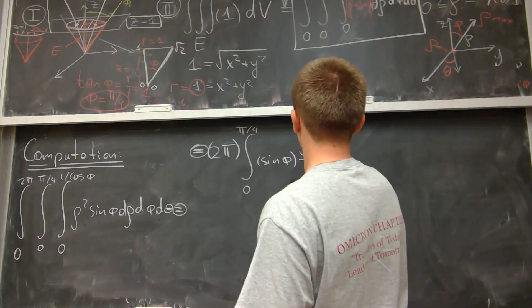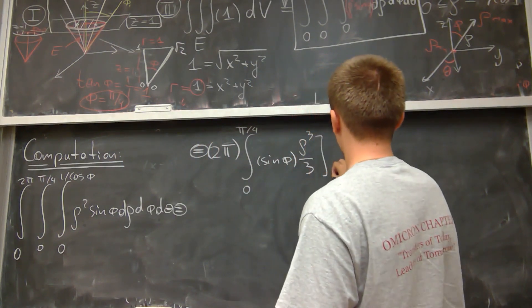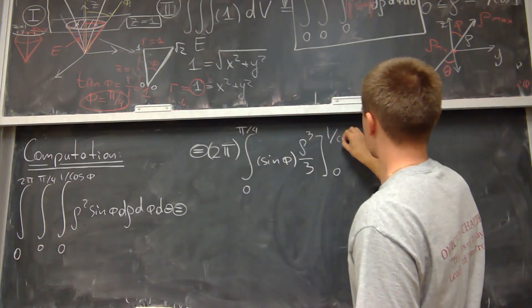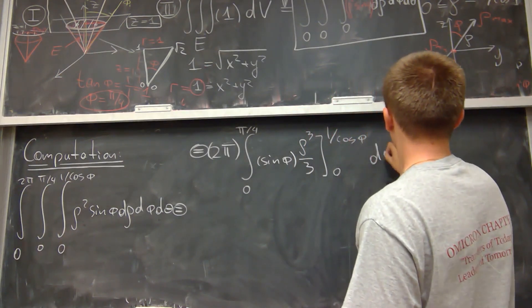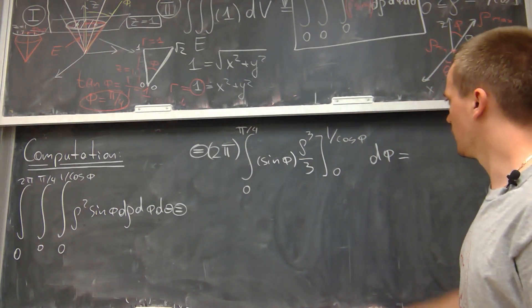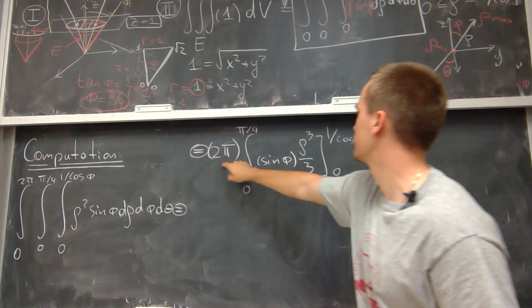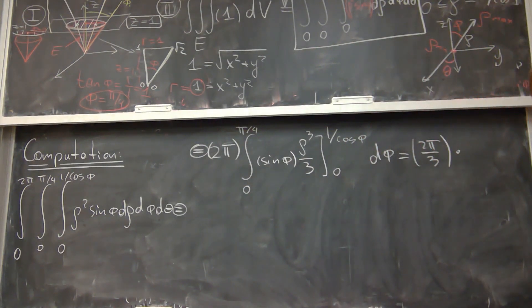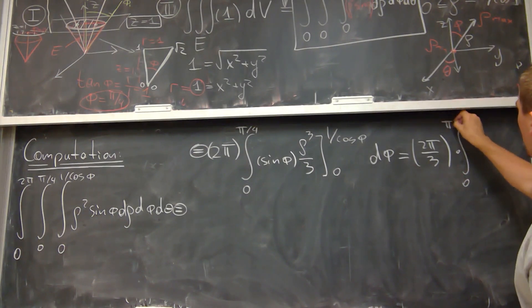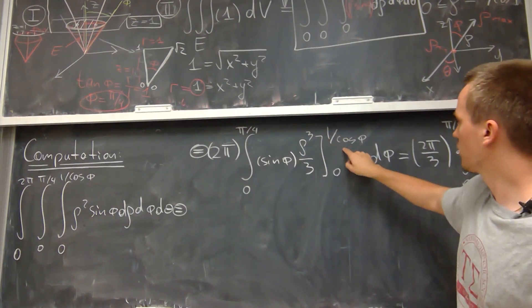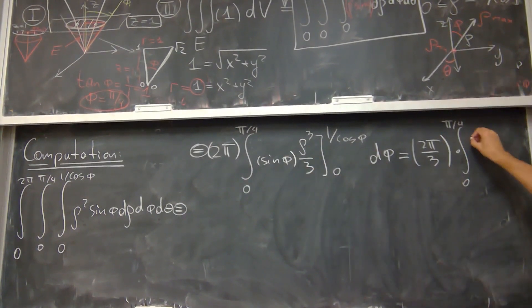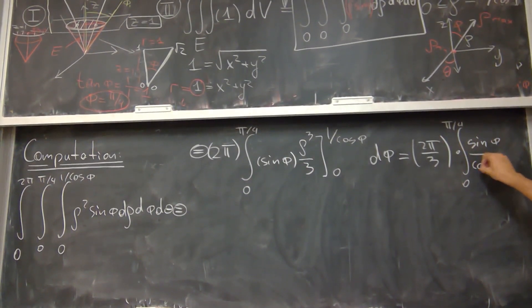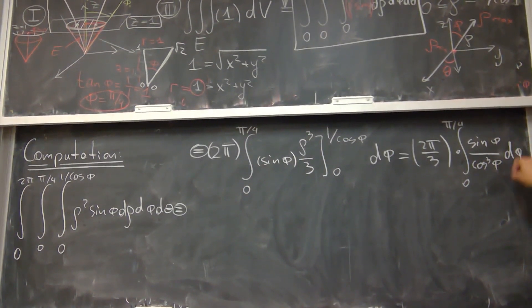After evaluating the ρ bounds I get 2π/3 times the integral from 0 to π/4 of sin φ over cos³ φ dφ.